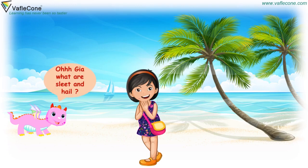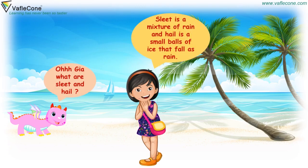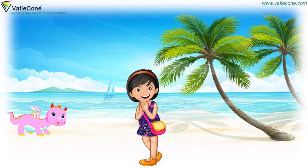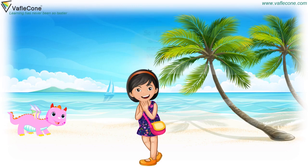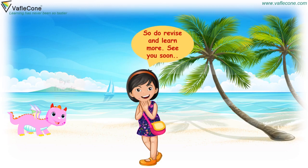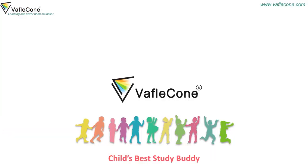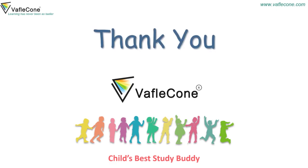Oh Jiya, what are sleet and hail? Sleet is a mixture of rain and snow, and hail is small balls of ice that fall as rain. Dodo, now you got it? Yes! So do revise and learn more. See you soon! Bye-bye friends! Thank you! Bye-bye!